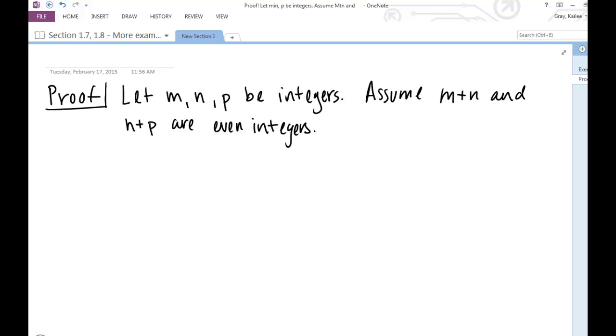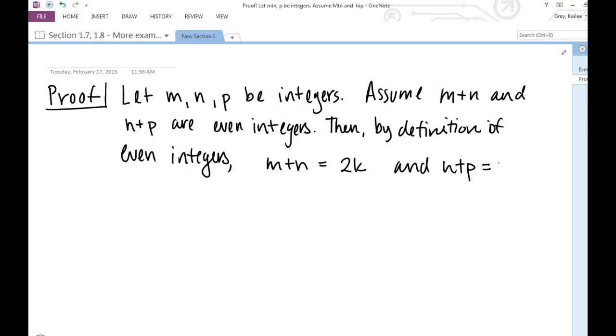Now, a natural thing to do right after you're making assumption about the parity of your integers is to use the definition of even or odd integers to rewrite those expressions in a different way. So I'm going to say then, by definition of even integers, M plus N is equal to 2K, and now I used a new variable. I need to make sure to introduce it. I'm not going to have an overlapping variable. I can't say M plus N is equal to 2N. That doesn't make any sense. I can't say N plus P is equal to 2K. That doesn't make any sense either. And I need to make sure that I say K and L are integers. So, I'm just using the definition of even integers here.